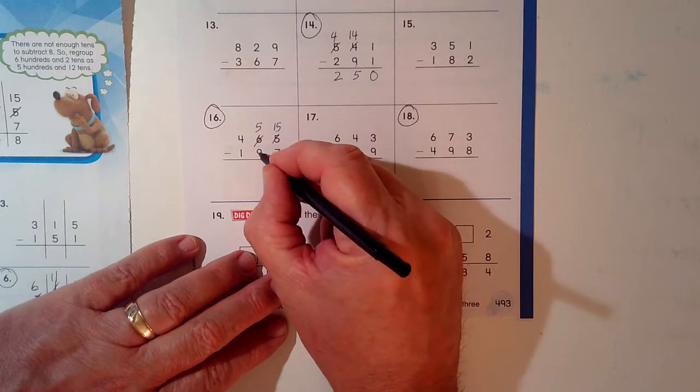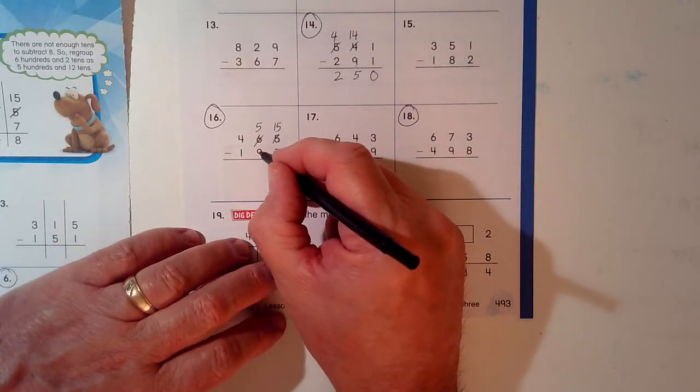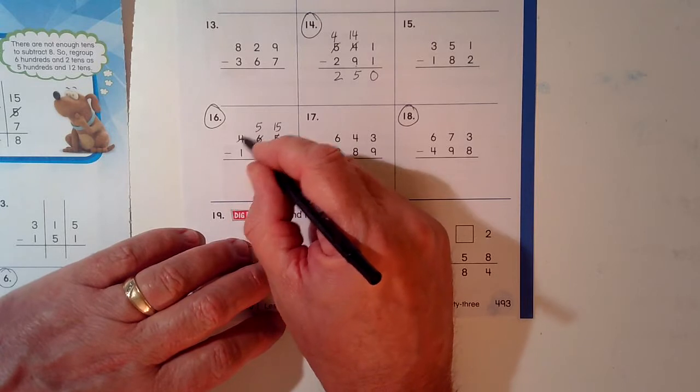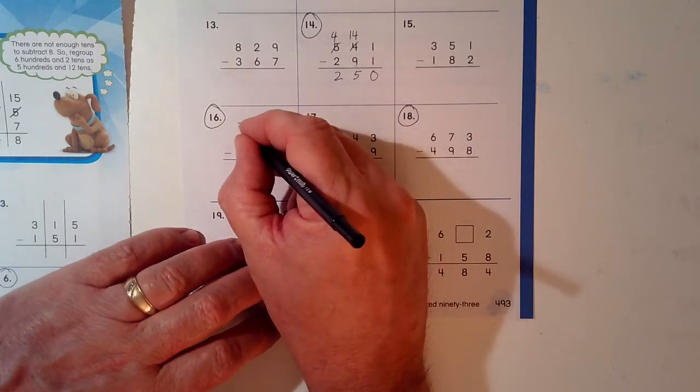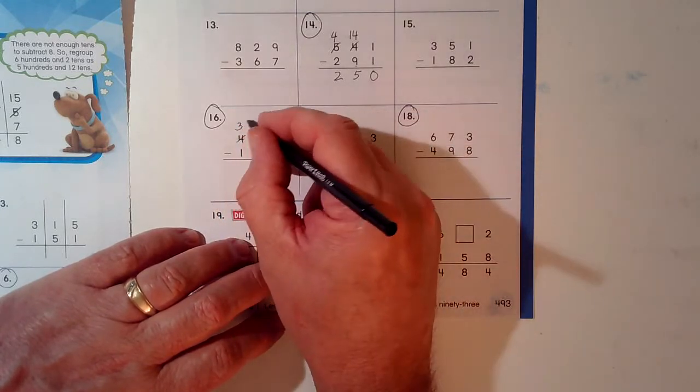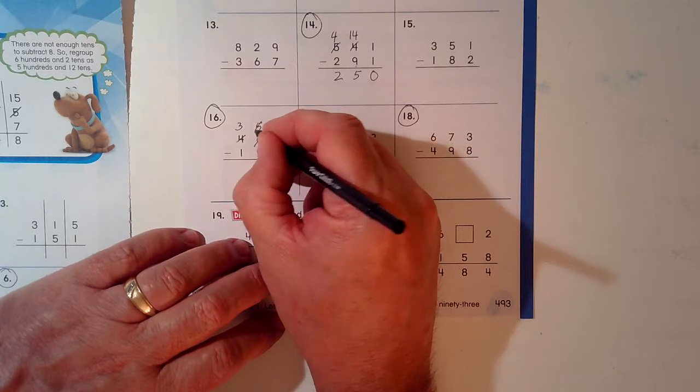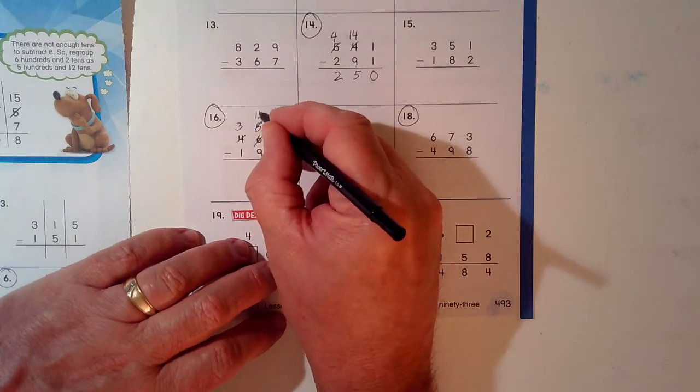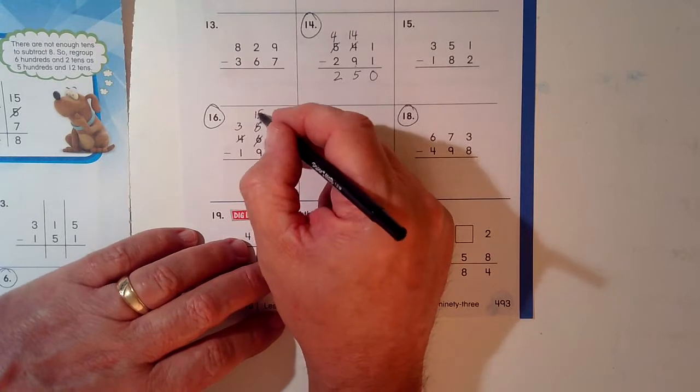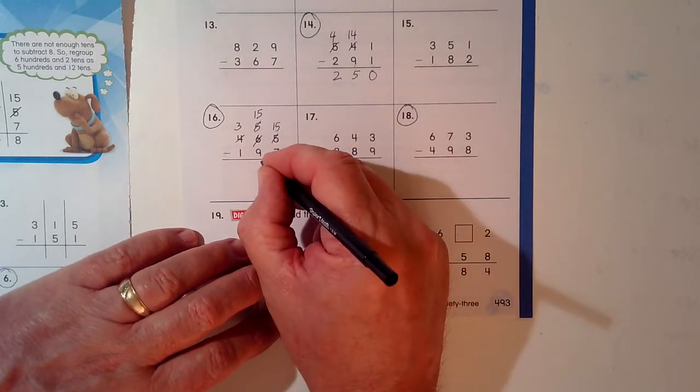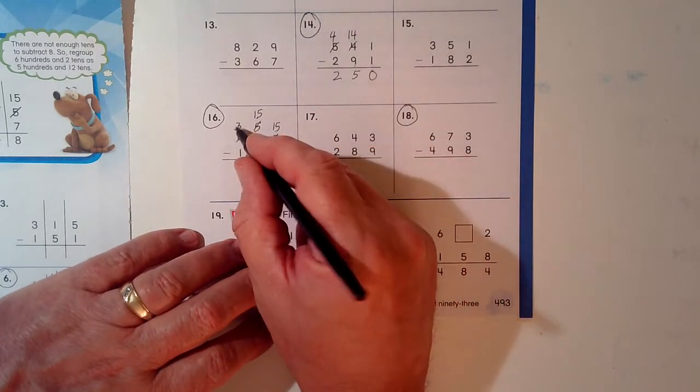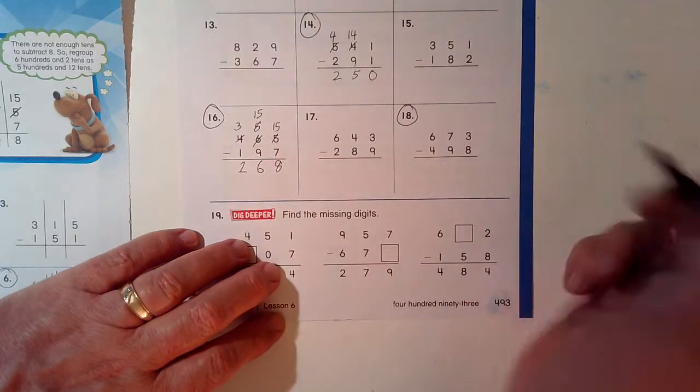5 minus 9, can I do it? Nope. Bigger on the bottom, better borrow. So I take one of these hundreds. Now there's 3. I put the 10 tens over here with the 5 tens. Now I have 15 tens. 15 minus 9, I can do that. It's a 6. 3 take away 1 is 2. Last problem.